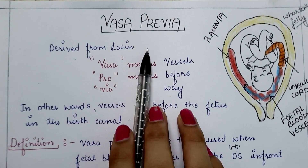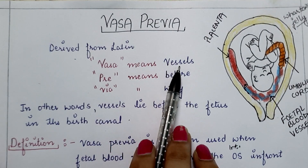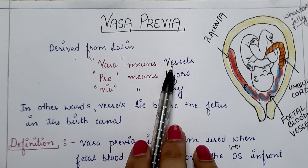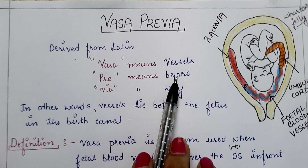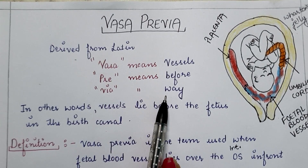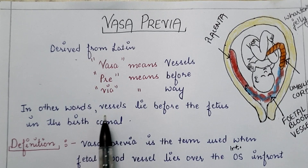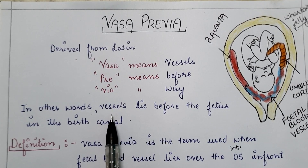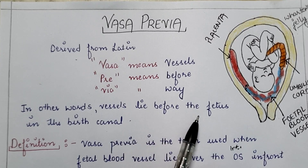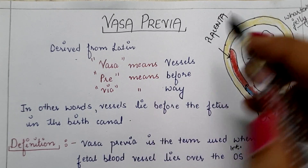Vasa means vessels — that are the fetal blood vessels. Pre means before, and via means way. In other words, vessels — the fetal blood vessels — lie before the fetus in the birth canal.